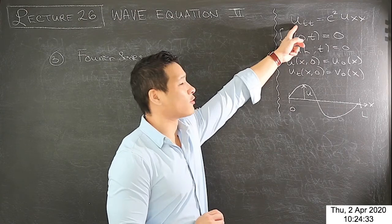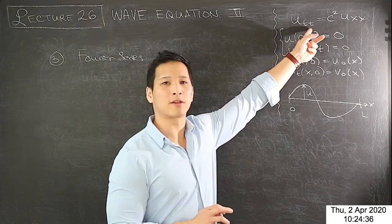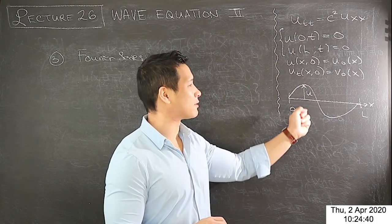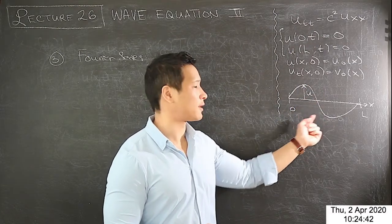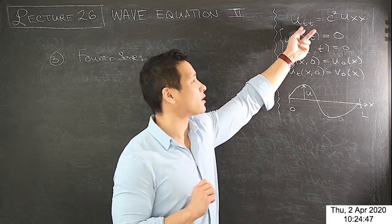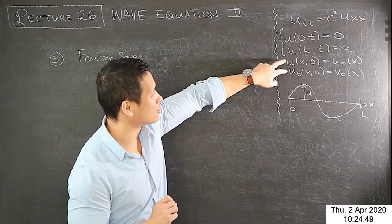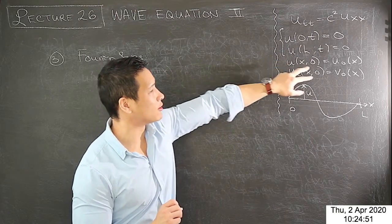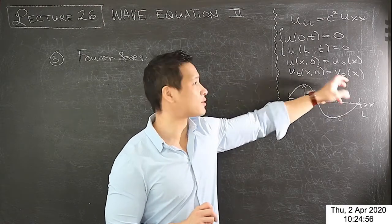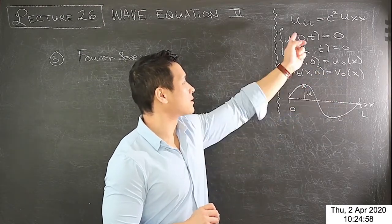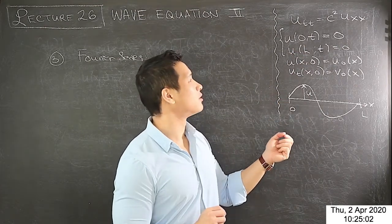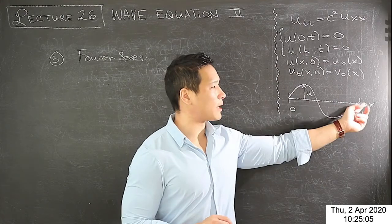This is the wave equation, which is different from the heat equation. You have two time derivatives in the displacement U — the vertical displacement from the axis — for a string of length L. Because there are two time derivatives instead of one as in the heat equation, you need two initial conditions in time. You need to specify the initial displacement and the initial velocity of the string. This is the simplest case — zero Dirichlet boundary conditions.